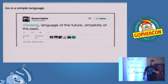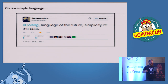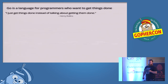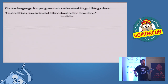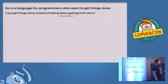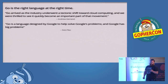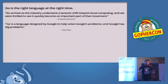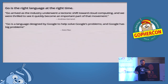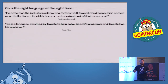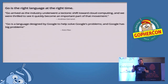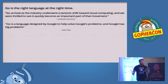Go is a simple language. This is not an accident — it was a deliberate decision, executed brilliantly by experienced designers who struck a chord with pragmatic developers. Put simply, Go is a language for programmers who want to get things done. Go arrived as the industry underwent a tectonic shift towards cloud computing, and it quickly became an important part of that movement. Go's success is directly attributable to the factors that motivated its designers. As Rob Pike noted, Go is a language designed by Google to help solve Google's problems — and Google has big problems. But it turns out that Go's design choices are applicable to the problems that many of us face as professional programmers.